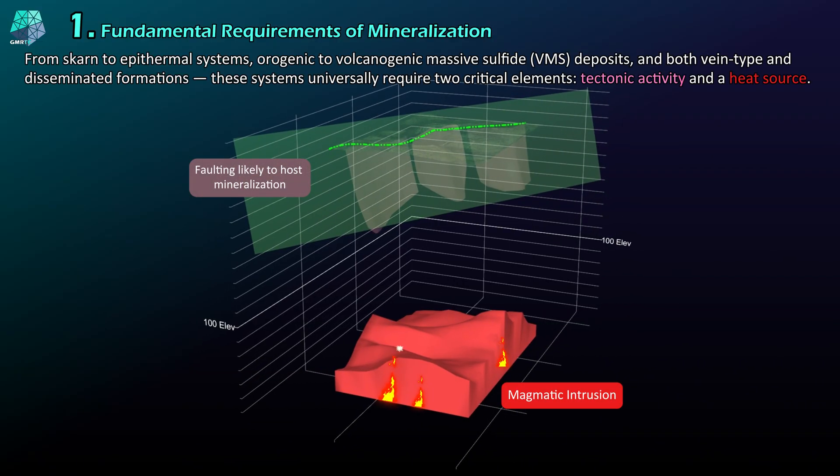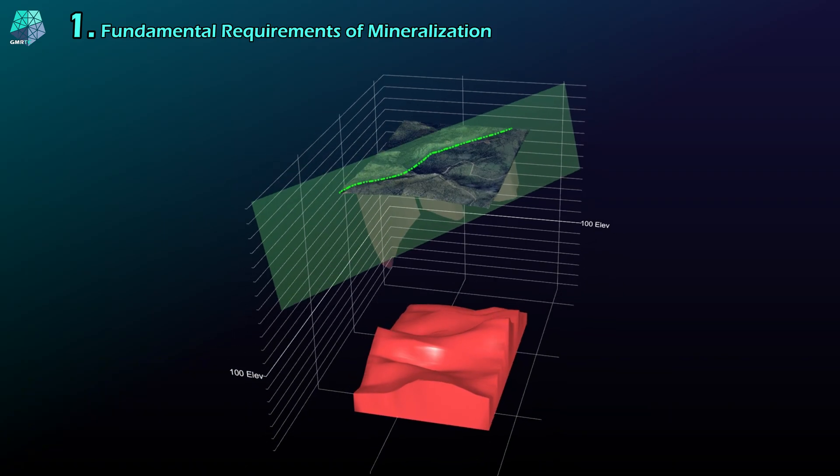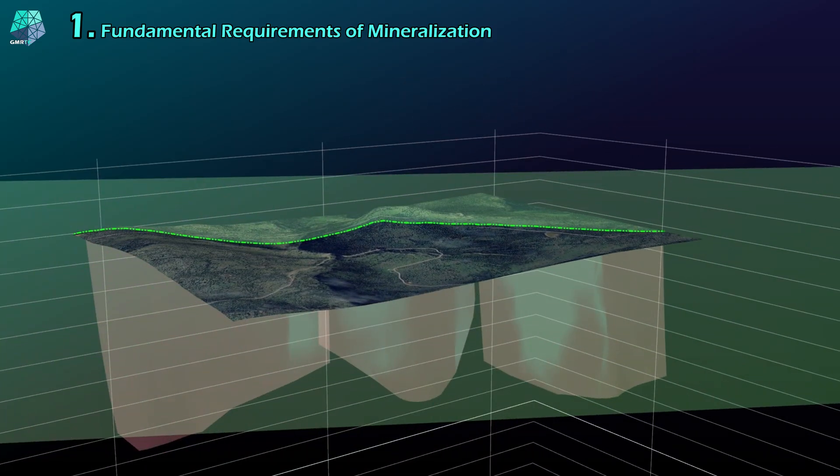From SCARN to epithermal systems, orogenic to volcanogenic massive sulfide deposits, and both vein type and disseminated formations, these systems universally require two critical elements: tectonic activity and a heat source.